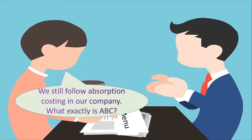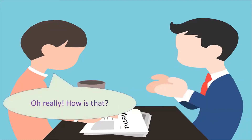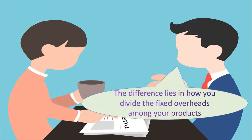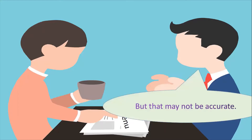What exactly is ABC? ABC is activity-based costing. It is superior to absorption costing. The difference lies in how you divide the fixed overheads among your products. In absorption costing, we divide it based on labor hours or machine hours. But that may not be accurate.